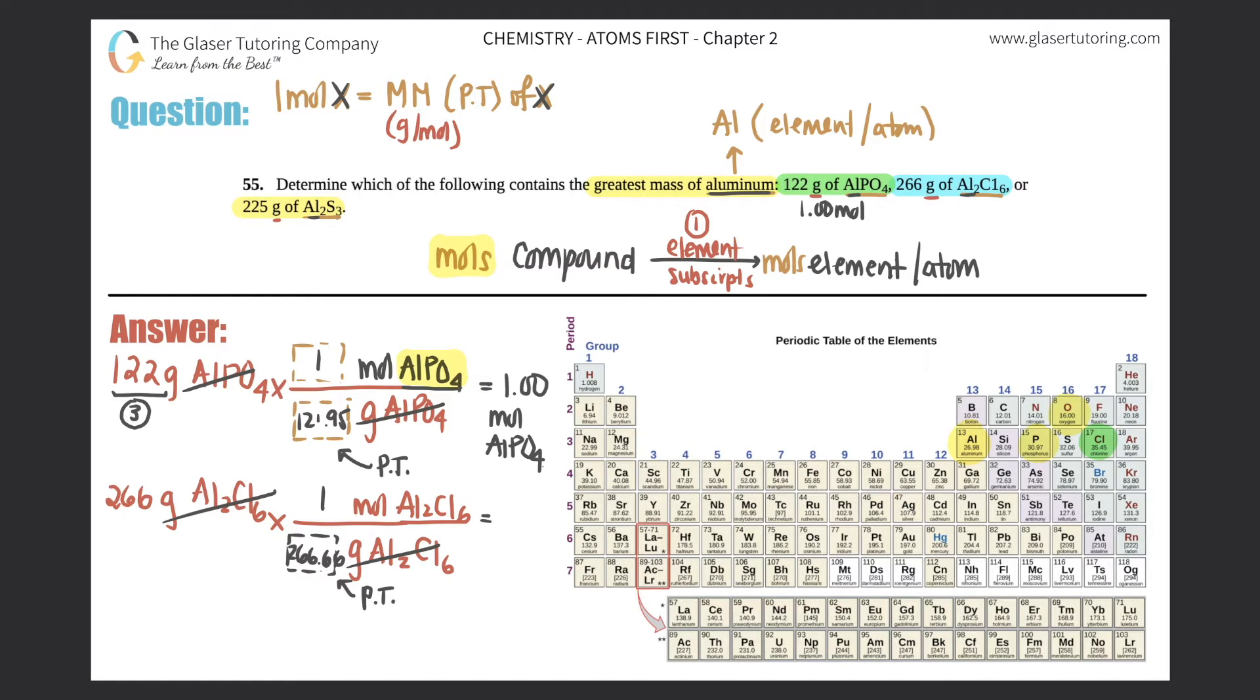So your answer should be 266.66. This cancels out, so 266 divided by 266.66, you get roughly three sig figs here, so you get 0.998 moles of Al2Cl6. So that goes here: 0.998 moles of this.